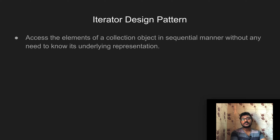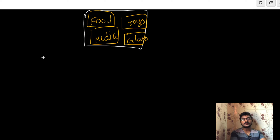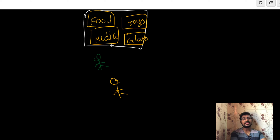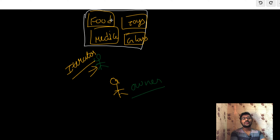The container holds food, medicine, toys, and glass packages. If this container needs to be delivered to some person in Chennai, there is an intermediate person who unloads the packages and delivers them to the owner. This intermediate person is the iterator. The iterator will try to access each package and give it to the owner.